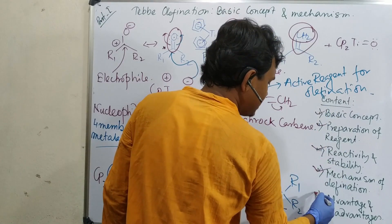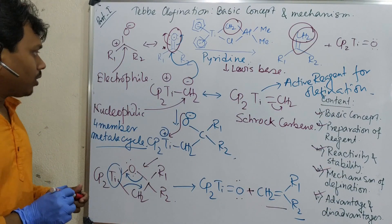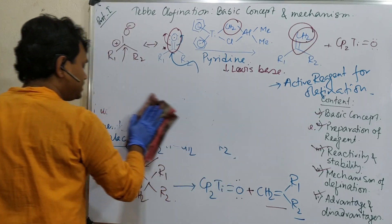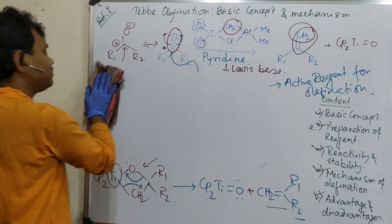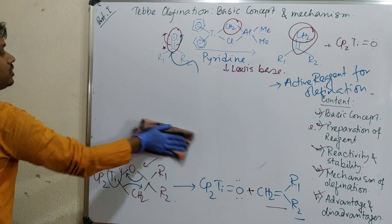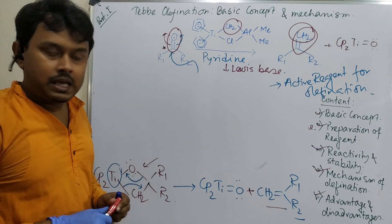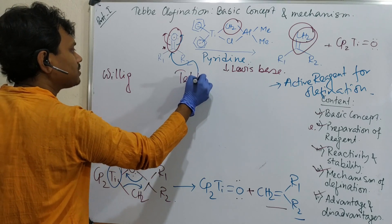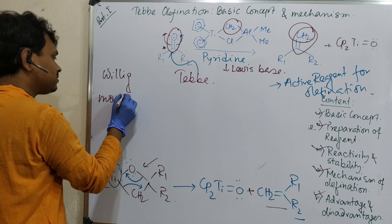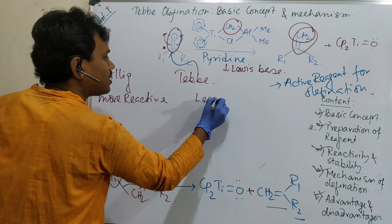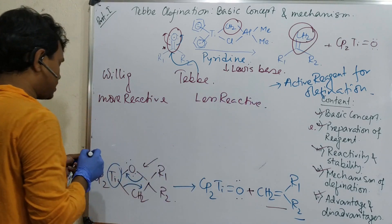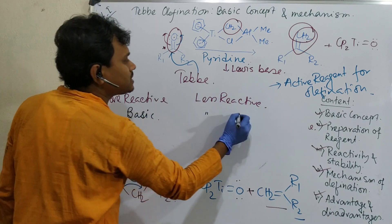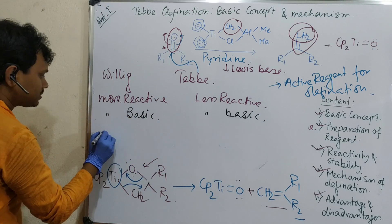So reactivity, stability plays basic concept and advantages and disadvantages. Advantages and disadvantages. Before go into details. So this reaction you have observed that it forms this double bond. So compare to Wittig, what is the advantage or disadvantage? Generally when we say advantage or disadvantage we compare. In case of Wittig reaction, Wittig versus Tebbe, Wittig is more reactive. This is less reactive. Point number one. Point number two, that Wittig is more basic. This is less basic.